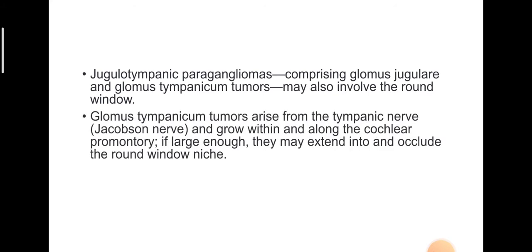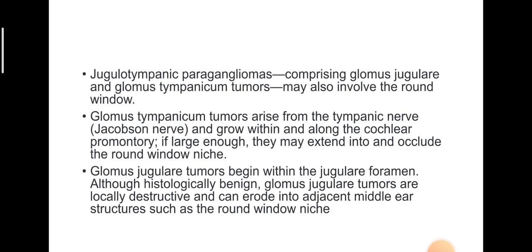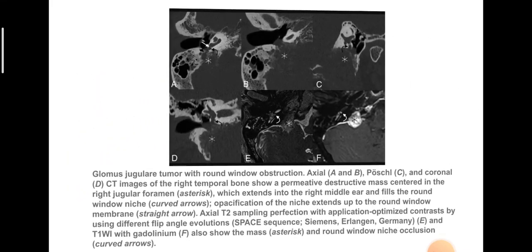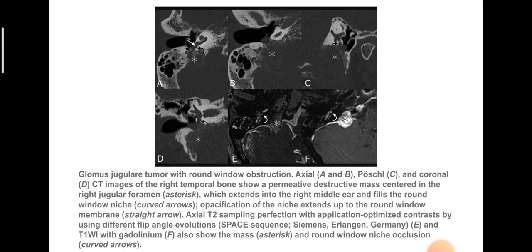Jugulotympanic paragangliomas — comprising glomus jugulare and glomus tympanicum tumors — may also involve the round window. Glomus tympanicum tumors arise from the tympanic nerve and grow along the cochlear promontory; if large enough they may extend into and occlude the round window niche. Glomus jugulare tumors begin within the jugular foramen and, although histologically benign, are locally destructive and can erode into adjacent middle ear structures such as the round window niche. This image shows a right temporal bone with a permeative destructive mass centered in the jugular foramen, extending into the right middle ear, filling the round window niche up to the round window membrane.